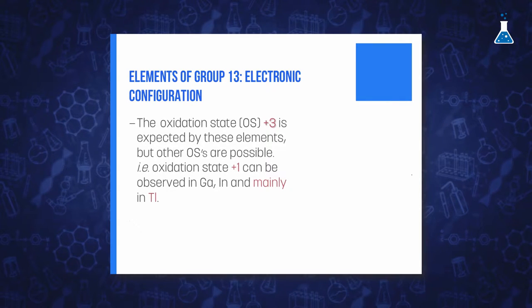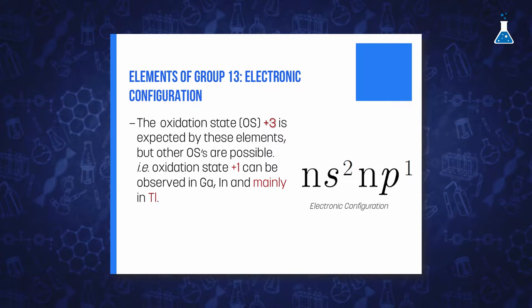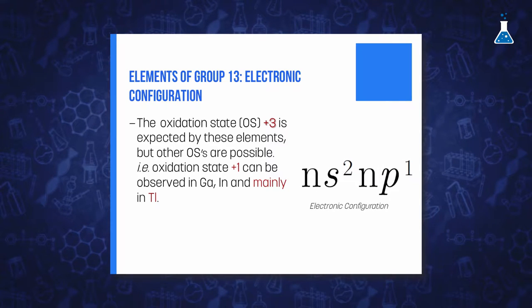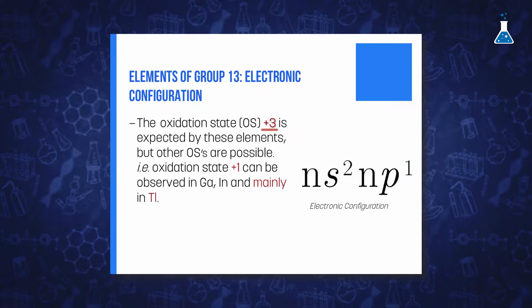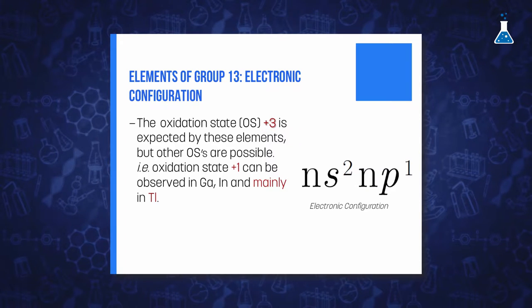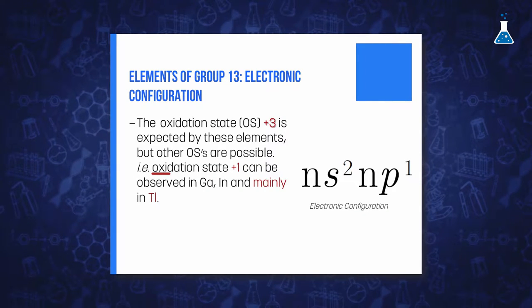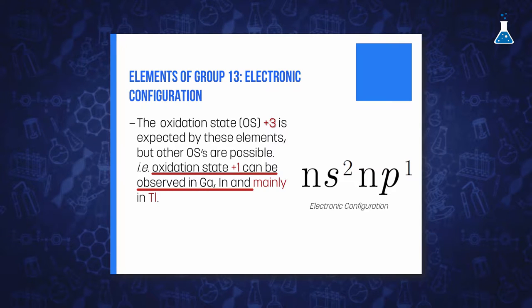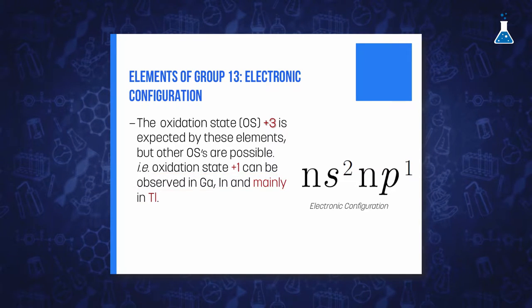In addition, according to that ns²np¹ electronic configuration, we should expect an oxidation state of 3+ for all members of the group, due to the loss of the three valence electrons. However, we also observe the oxidation state 1+ for gallium, indium, and thallium. For gallium and indium, the 3+ state predominates.